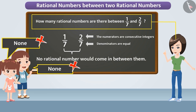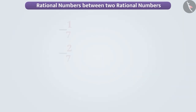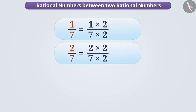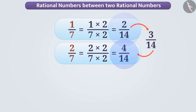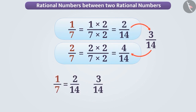Sarita said smilingly, both of you are wrong. There are infinite rational numbers between them. For example, if we multiply both the numerator and denominator of one by seven and two by seven by two, then we get equivalent rational numbers two by fourteen and four by fourteen. Now, three by fourteen is the rational number between these two — that is, two by fourteen is smaller than three by fourteen, and three by fourteen is smaller than four by fourteen.